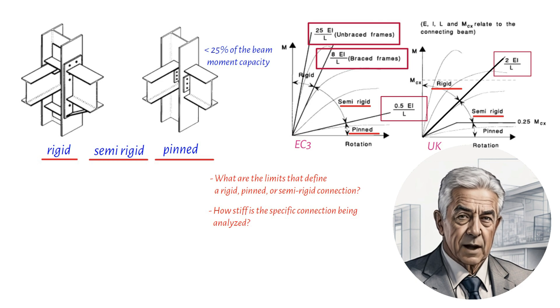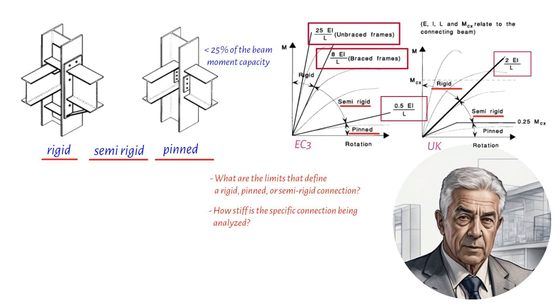In the UK, pinned connections are typically defined by their moment capacity, with connections having a maximum capacity of less than 25% MP regarded as pinned, provided they have some ductility or freedom to rotate.